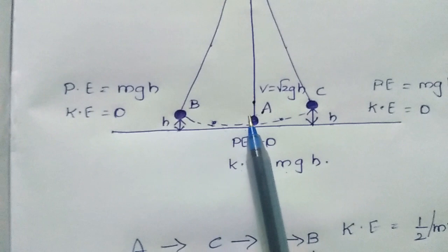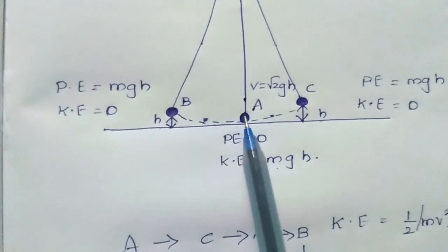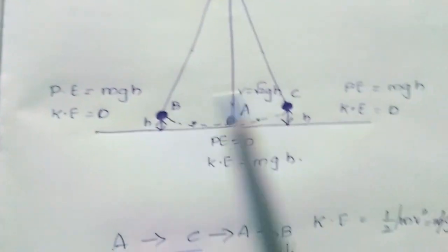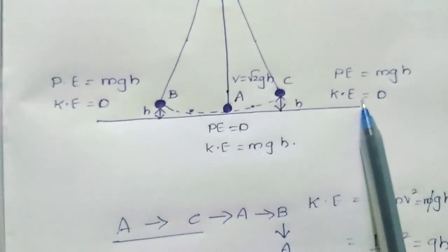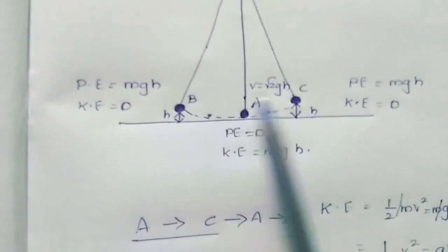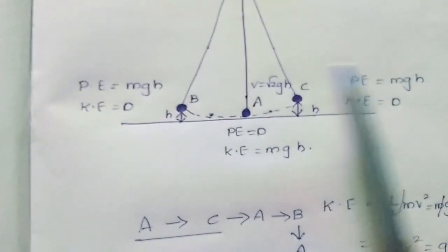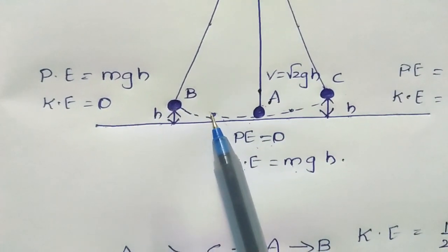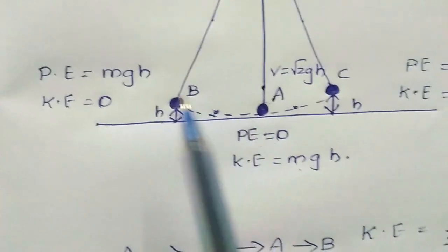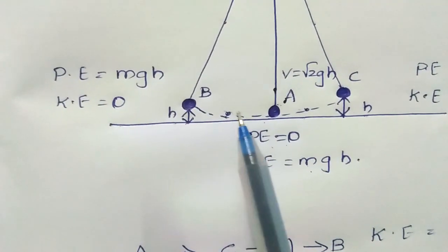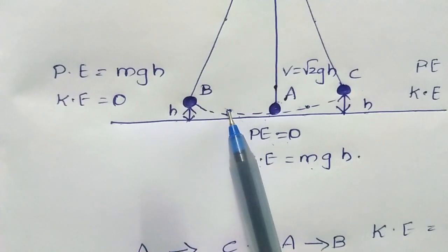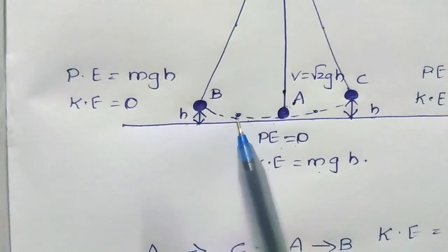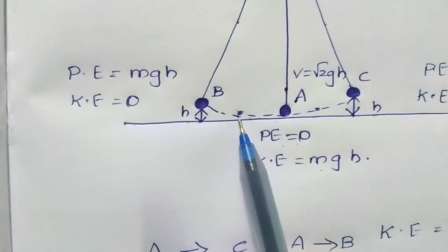But at the intermediate positions from A to B middle and A to C middle, first C has kinetic energy 0 and potential energy mgh, and B also has kinetic energy 0 and potential energy mgh. During its intermediate positions, when it is moving from A to B, at the intermediate position, a difference in height is observed and it will also have kinetic energy.